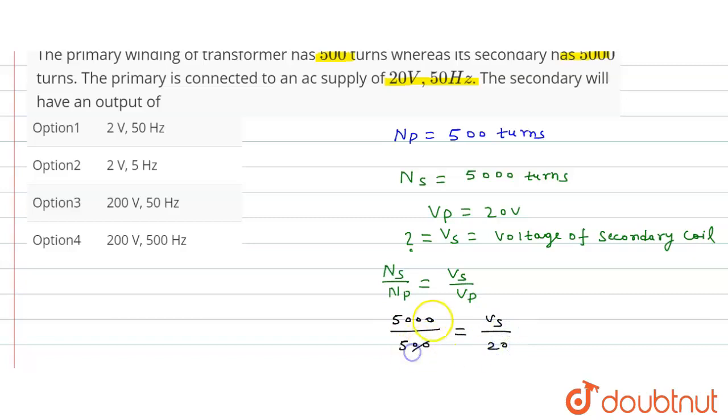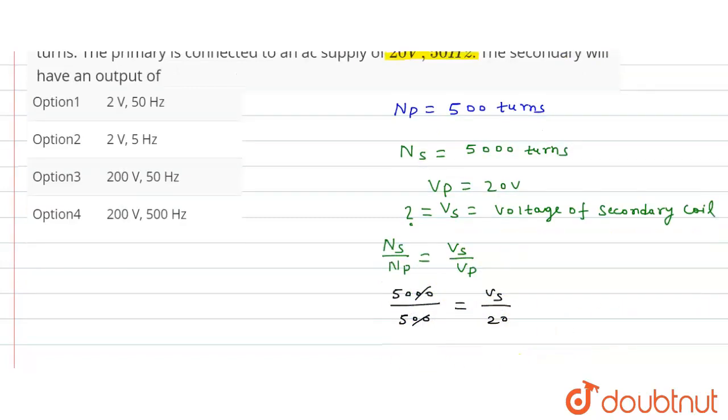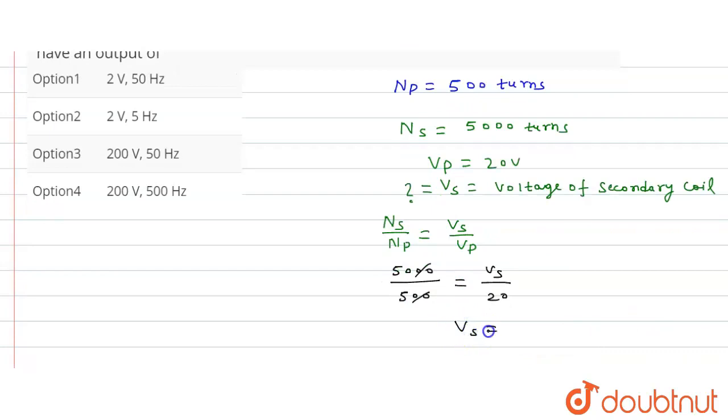So this will be cancelled here, 20. So from here VS is equal to how much? This is 50 into 20, that is equal to how much?